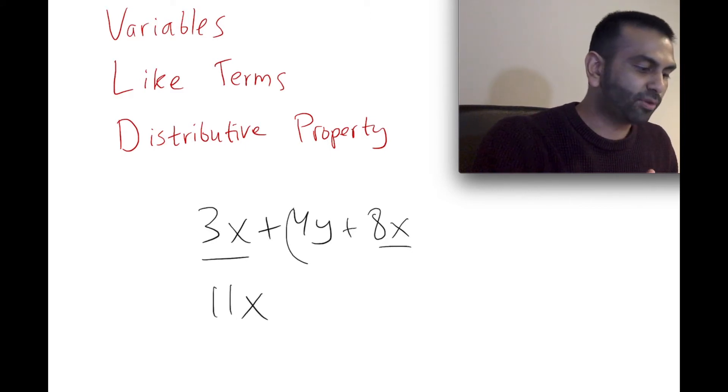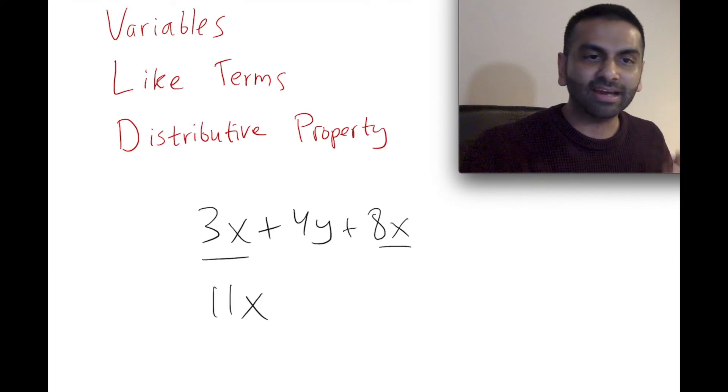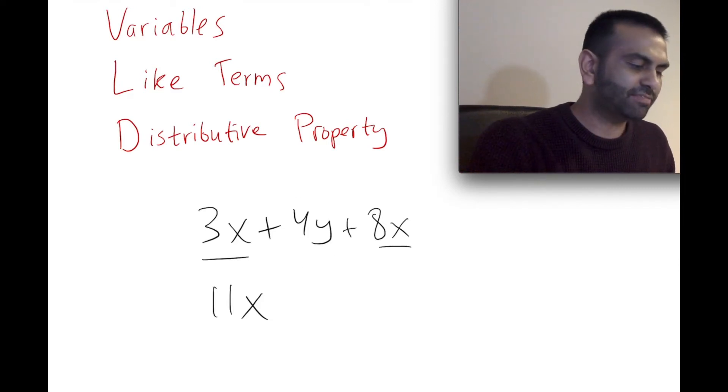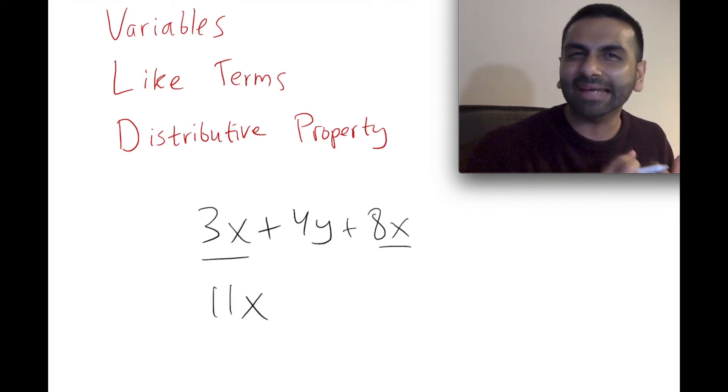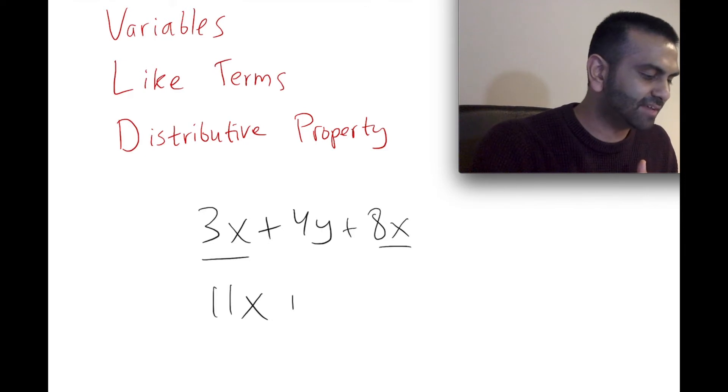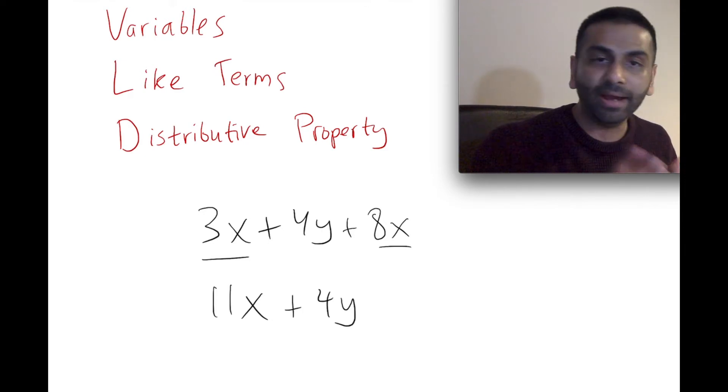But this 4Y is something else. It's like you have 11 apples but then you have these four bananas, and you can't really add them and say that's 15. So you would leave it as 11X + 4Y, and that would literally be your final answer.